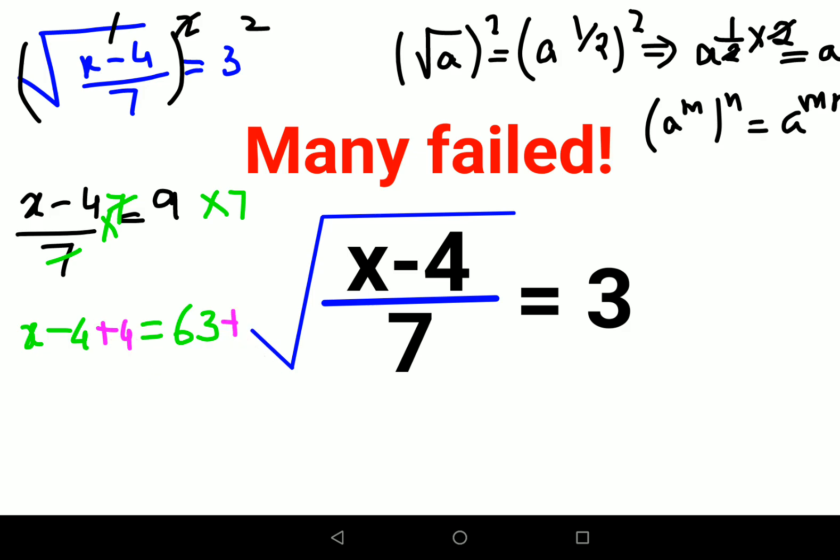Add 4 on both sides so they cancel, and x equals 67. Now let's try and put this value of x back in and check whether we're getting the right value or not.